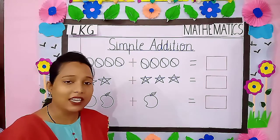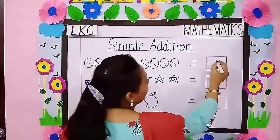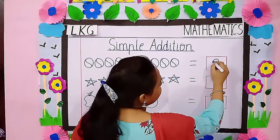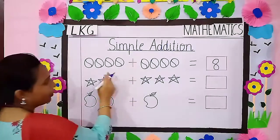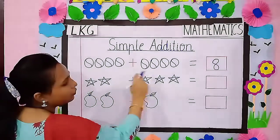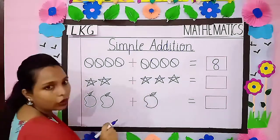Can you tell me? Yes. We have to write here number 8. Now 4 balls plus 4 balls is equal to 8.